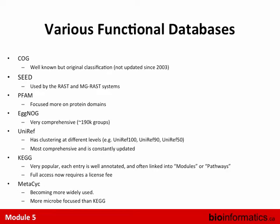There are lots of functional databases out there. COG stands for Clusters of Orthologous Groups — it's been around for a long time. The actual database hasn't really been updated since around 2003, but COG annotations, which use letter codes, are still used quite a bit, breaking things down into about 12 to 15 different groups. The SEED is another classification system used by systems like RAST and MG-RAST, which is a metagenomic server where you can upload your data.